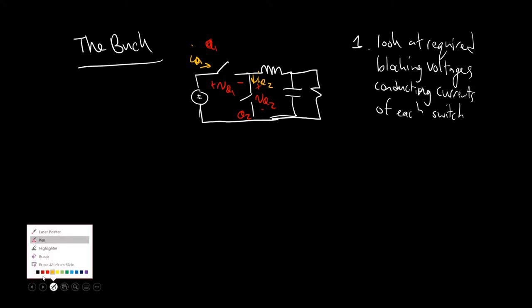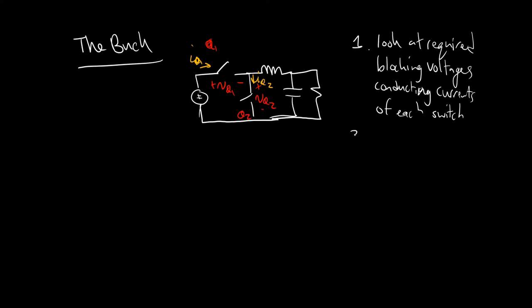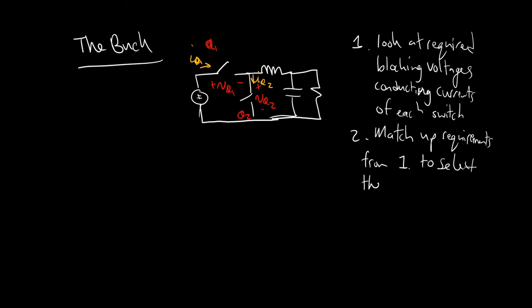So the first step is to look at the voltages and currents, and the second step is to match up the requirements to select the appropriate switch — in this case, either a MOSFET or a diode. So we analyze the converter, define voltages and currents for each switch, and then ask: does it need to block positive voltage and conduct positive or negative current? Then you select accordingly.